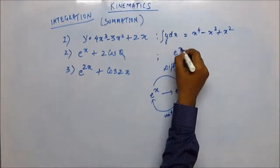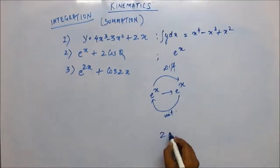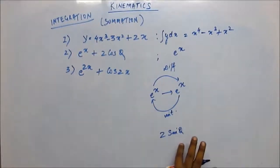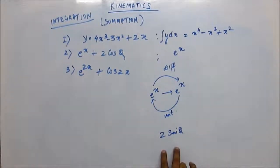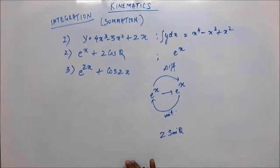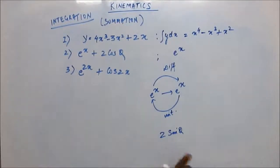So integration of e^x would be e^x. Now, what would you differentiate to get 2cos(x)? Intuitively, you understand that you have to differentiate 2sin(x) to get 2cos(x). So integration of 2cos(x) would be 2sin(x). This is how we check — we memorize the formula for differentiation and this becomes very handy to find the integration. Differentiation of sin(x) is cos(x), so integration of cos(x) would be sin(x).